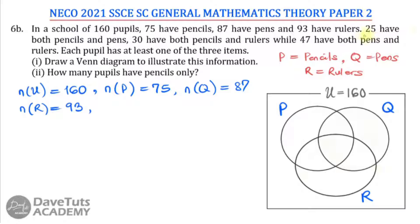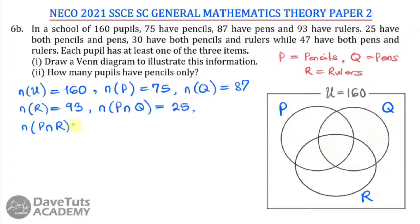Then we have the intersections. 25 have both pencils and paints, so the number of pencils intersect paints is given as 25. We are also told that 30 have both pencils and rulers, so P intersect R is given as 30. And then 47 have both paints and rulers, so Q intersect R is given as 47.